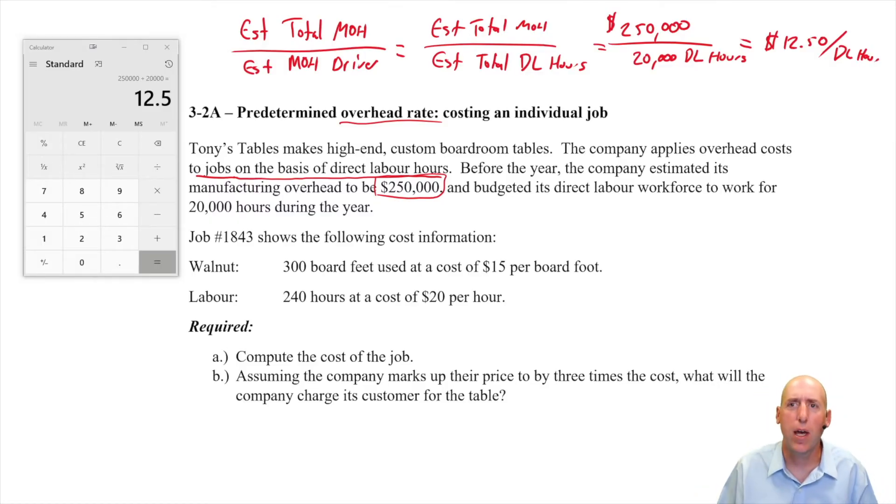$250,000 divided by 20,000 gives us a rate of $12.50 per direct labor hour. So sometimes when I write on the extreme corner of the screen, it goes off on the video, but I think I'm good.